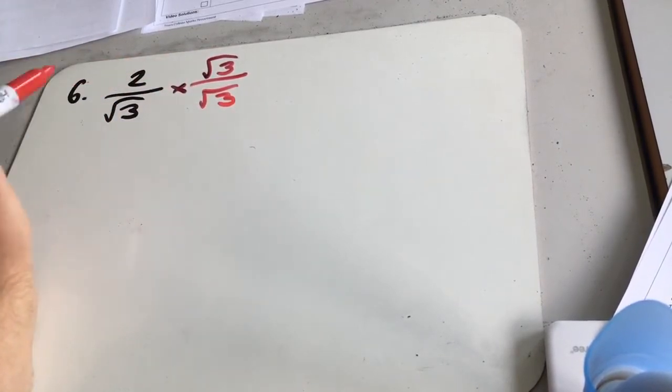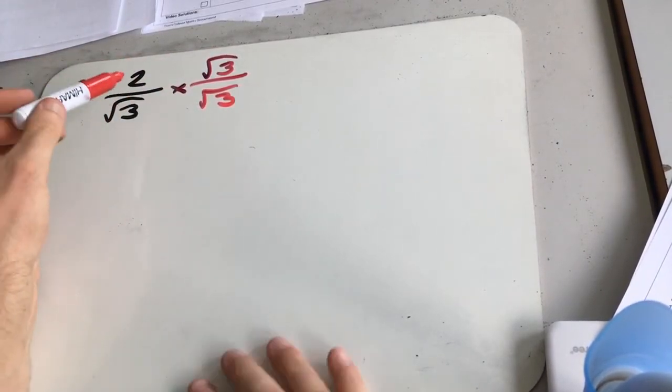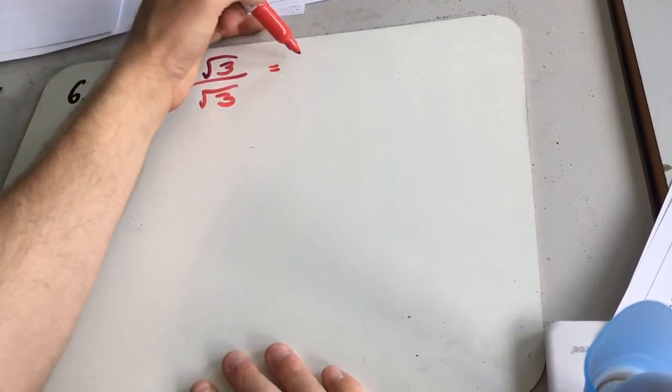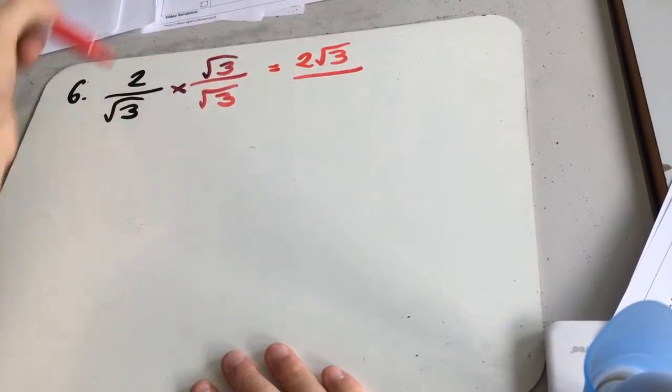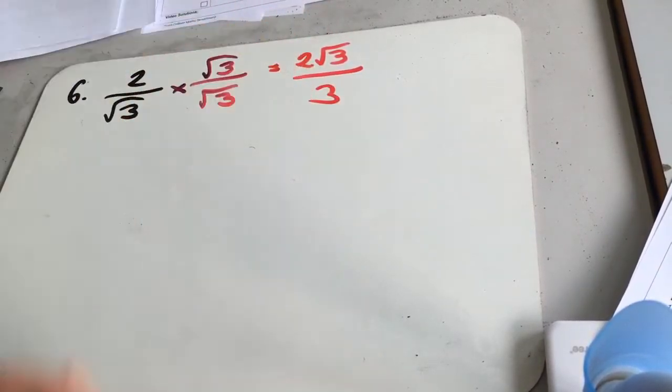So if we times this out, 2 times root 3 gives us 2 root 3. And root 3 times root 3 is 3.